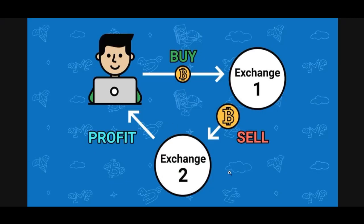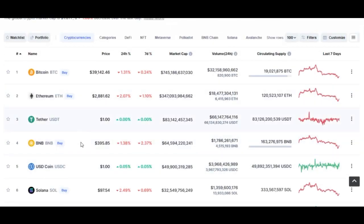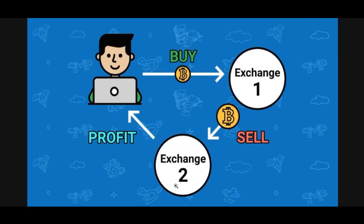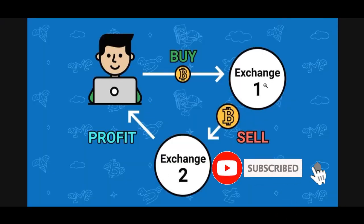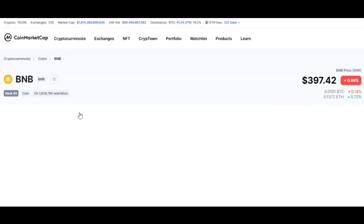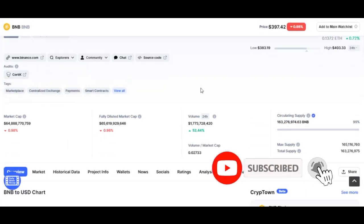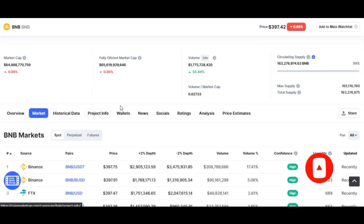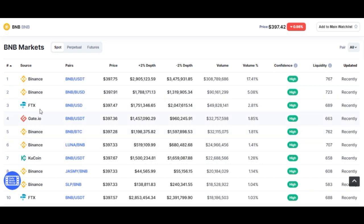Arbitrage trading simply means you source crypto assets you want to buy from a platform where they are sold at a lower price. For example, you go to Exchange 1, buy at a lower price, transfer those coins to Exchange 2, and sell at a higher price, making a profit. Looking at CoinMarketCap, this happens across all tokens — you can see all the exchanges where BNB is traded.